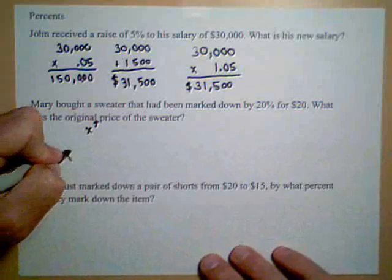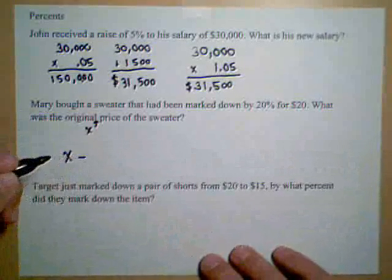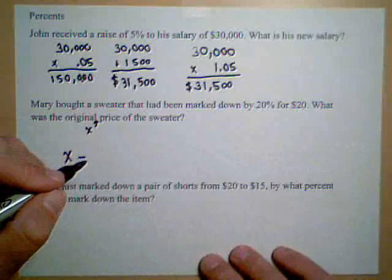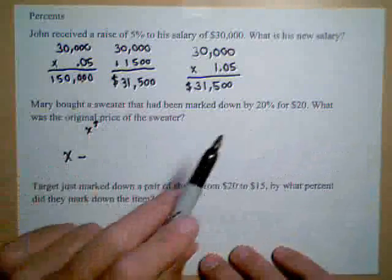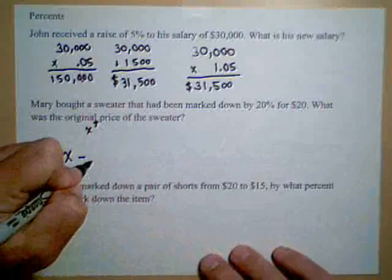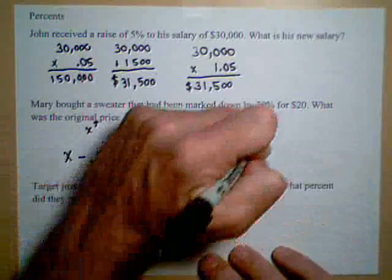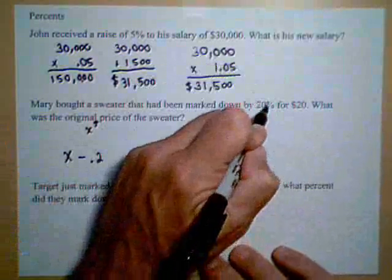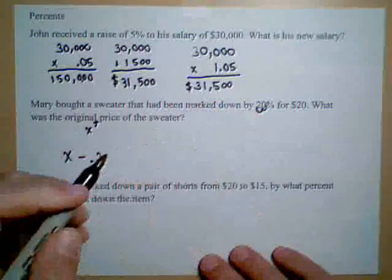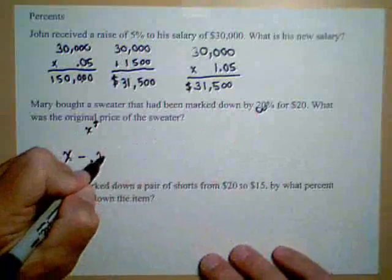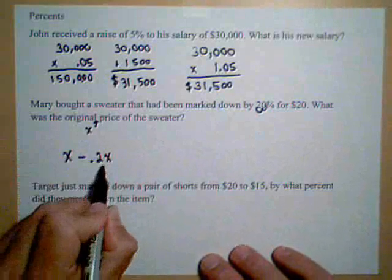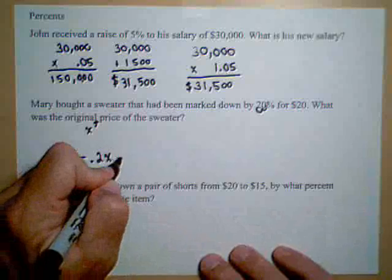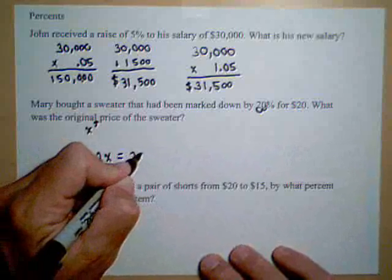We would take the original price, and then we would subtract off 20% of the original price. 20% of the original price is .2, because we have to move that decimal point two places, times the original price, which we're calling X. So this is the original price minus the 20% discount. That better be equal to $20.